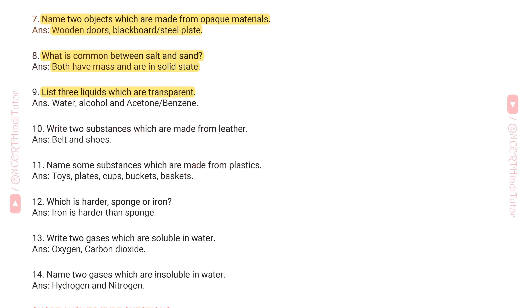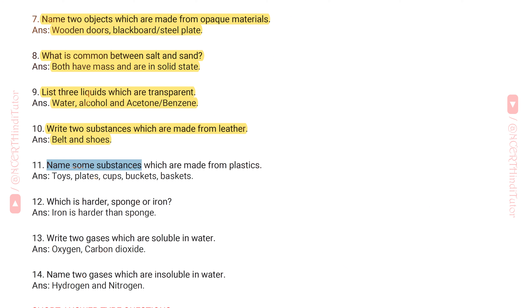Question 9: List three liquids which are transparent. Answer: Water, alcohol, and acetone or benzene. Question 10: Write two substances which are made from leather. Answer: Belt and shoes. Question 11: Name some substances which are made from plastics. Answer: Toys, plates, cups, buckets, baskets.